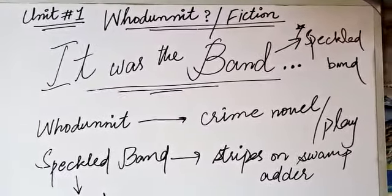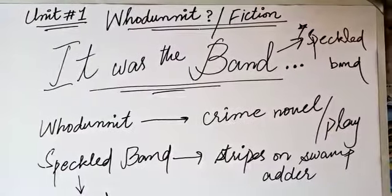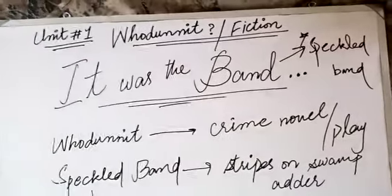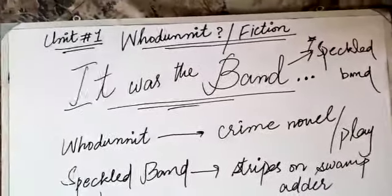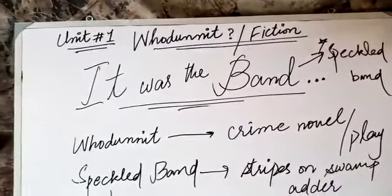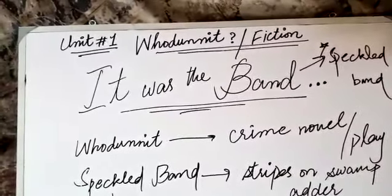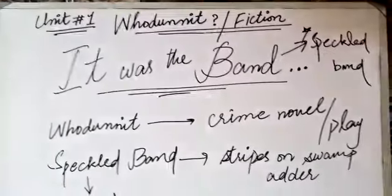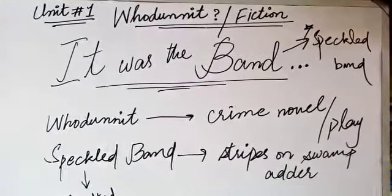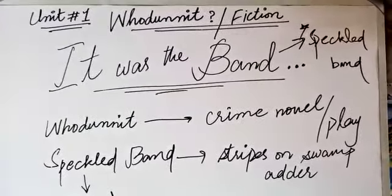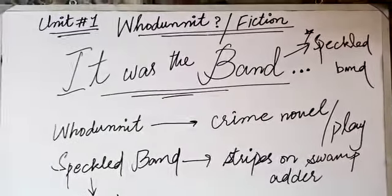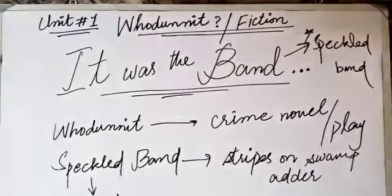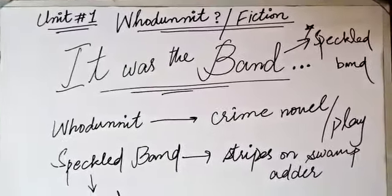The title of the first lesson says, 'It was a Band.' This is an extract from the collection of short stories of Sherlock Holmes by Sir Arthur Conan Doyle. You have already read about Sherlock Holmes, a fictional detective, and this is from the fiction part of your book.